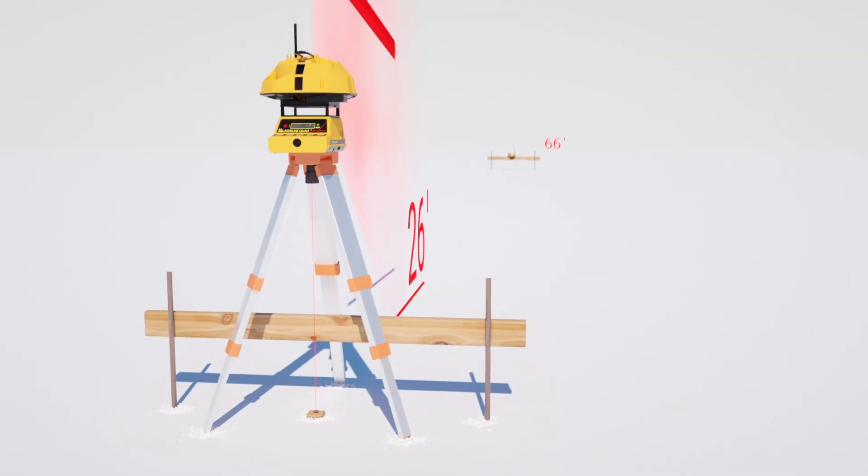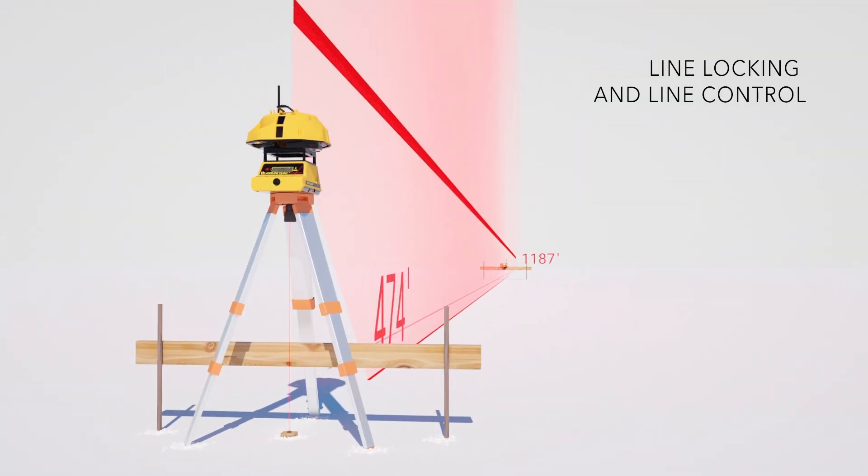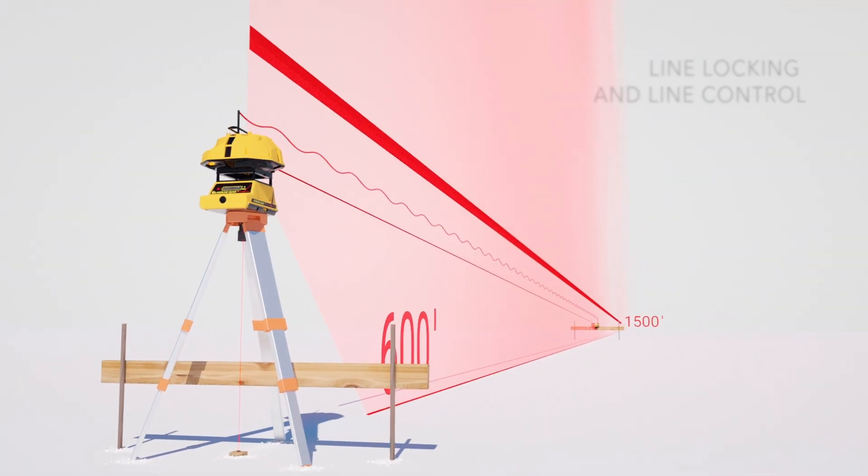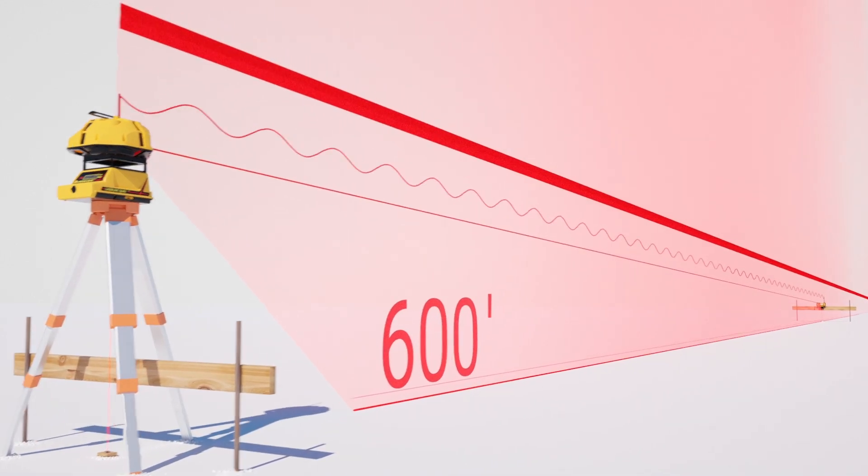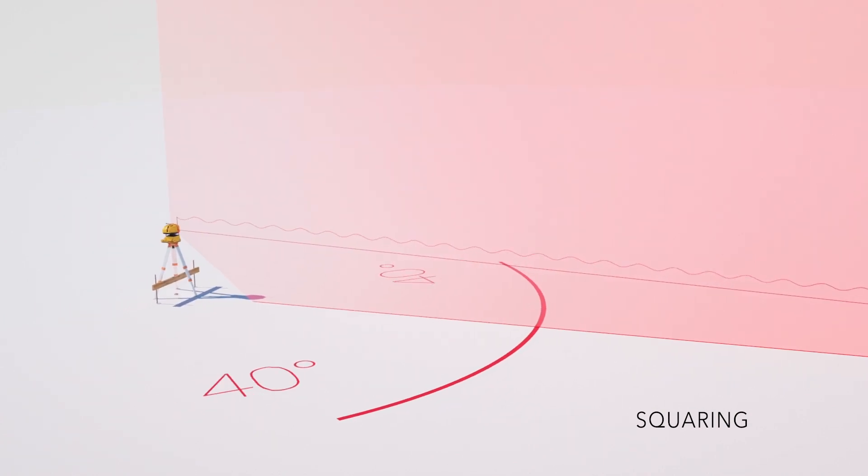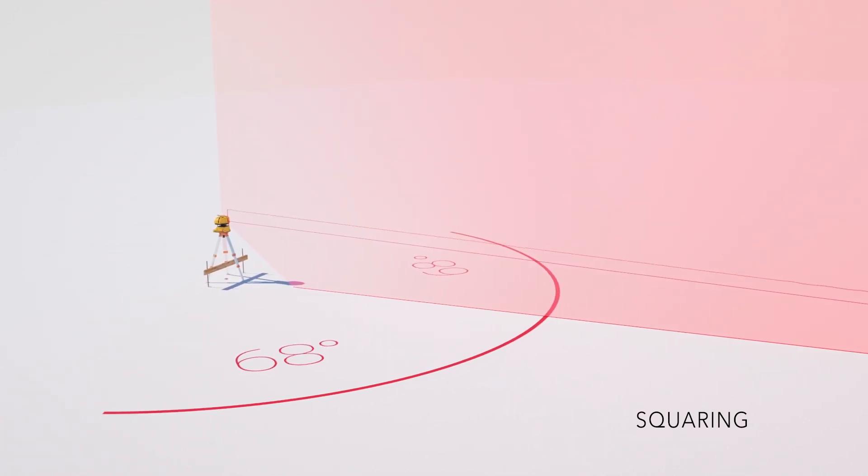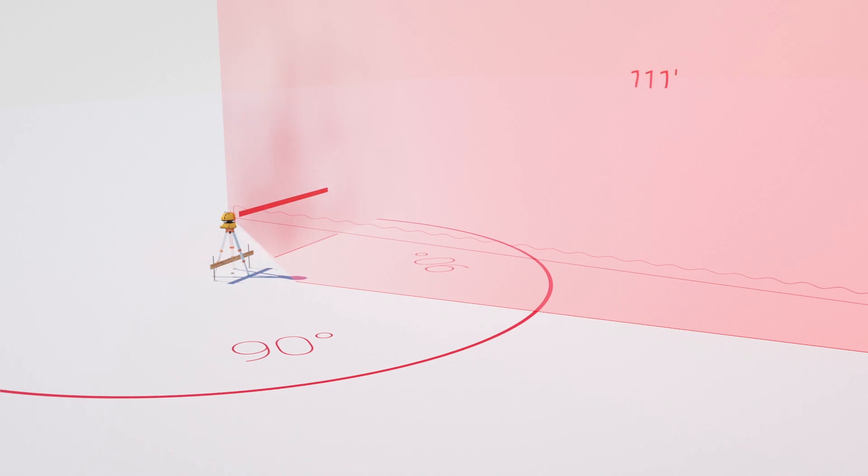Then a vertical plane from the Quad 4000 will automatically seek and lock onto the line locker with a single push of a button. It then produces a 90 degree angle for squaring applications by simultaneously transmitting a rotating plane of light at 90 degrees left and 90 degrees right of your baseline.